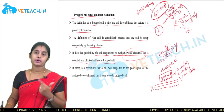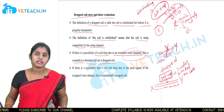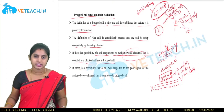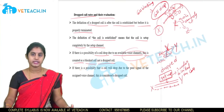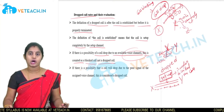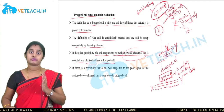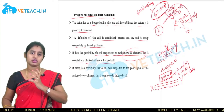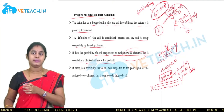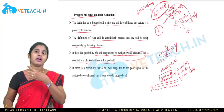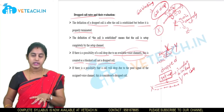To summarize: dropped calls occur when any technical or non-technical issue disconnects the call mid-conversation without the subscriber's intention to terminate. Blocked calls occur when subscriber B's voice channel is already engaged with another subscriber, so availability is zero — the call is blocked.